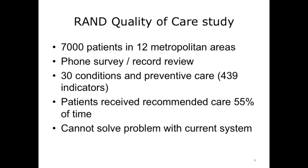A 2003 RAND Corporation study published in the New England Journal of Medicine collected data on 7,000 patients in 12 different metropolitan areas through medical record review and telephone surveys. The study examined quality indicators across 30 different conditions and preventive care, totaling 439 indicators of quality. The findings showed that patients received recommended care only 55% of the time — meaning compliance with care quality guidelines happens only about half the time. One of the study's authors observed that a new approach to quality improvement would be needed, rather than continuing with the current approach.